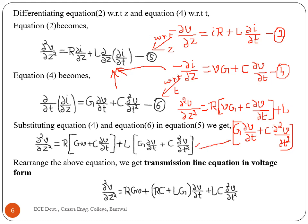By rearranging this equation, and rearranging once more, we obtain the transmission line equation in voltage form: ∂²V/∂z² equals R·G·V plus (R·C plus L·G)·∂V/∂t plus L·C·∂²V/∂t². Note that we neglected the minus sign from equation 4 when substituting into equation 5, because wave propagation takes place in the positive Z direction. This is our final voltage form transmission line equation.